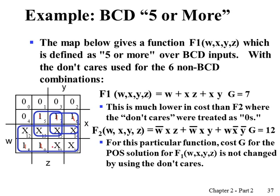When input is 10, 11, 12, 13, 14, or 15 — which never occurs — we put x instead of 1 or 0. In finding the simplified expression, we interpret x as 1 if that provides a bigger prime implicant, otherwise we don't have to use x. Instead of covering 1s alone, which gives a gate input cost of 12, if we utilize x as 1 we find a bigger prime implicant, resulting in a more simplified expression with a gate input cost of 7. Whenever we have don't-care conditions, we interpret as 1 if it results in a bigger prime implicant; otherwise we simply ignore it.